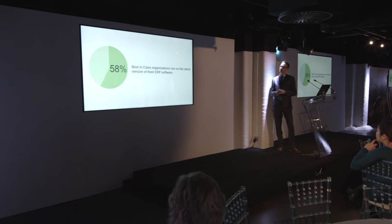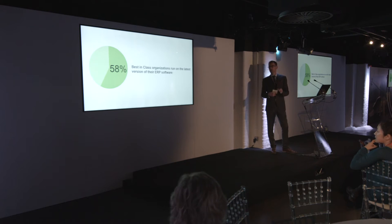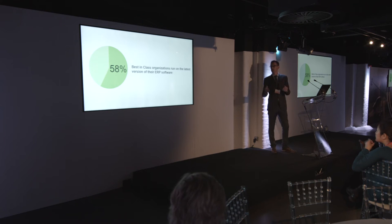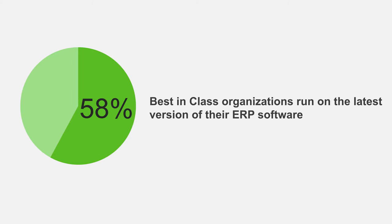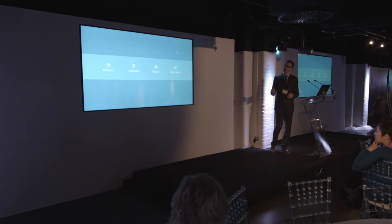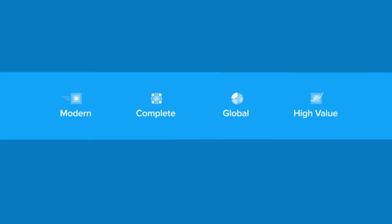An interesting statistic: one of the things I'd really like to get across today is that we're up to version Sun Systems 6.2, our latest release. 58% of all best-in-class organisations run on the very latest version of their ERP or financial software. We've got a big customer base running multiple versions — some of you may even be on Sun Systems version 4. So our urge is to look at what we're showing you, what you can do with the system, and bear in mind that statistic about who runs the latest versions.